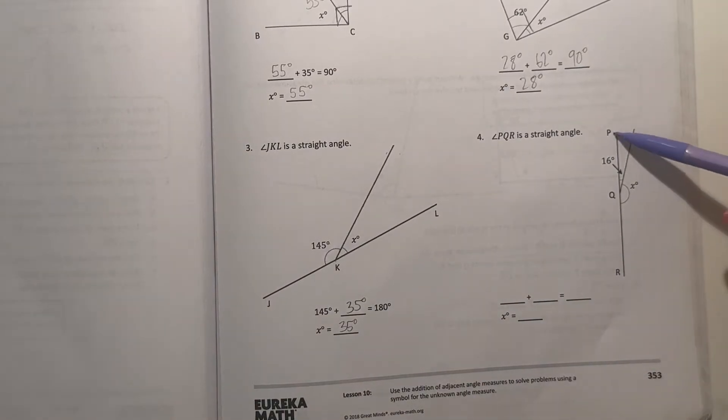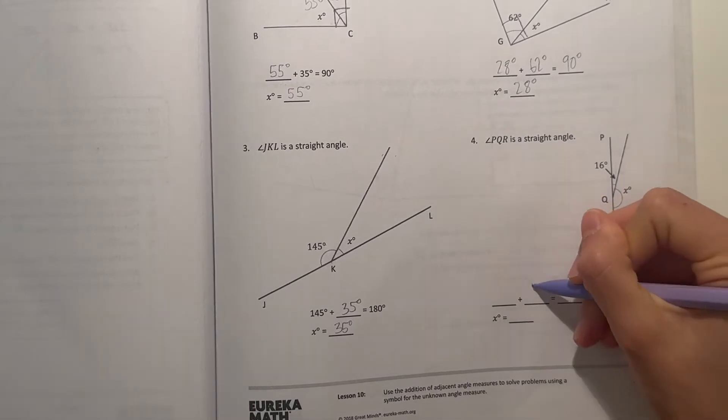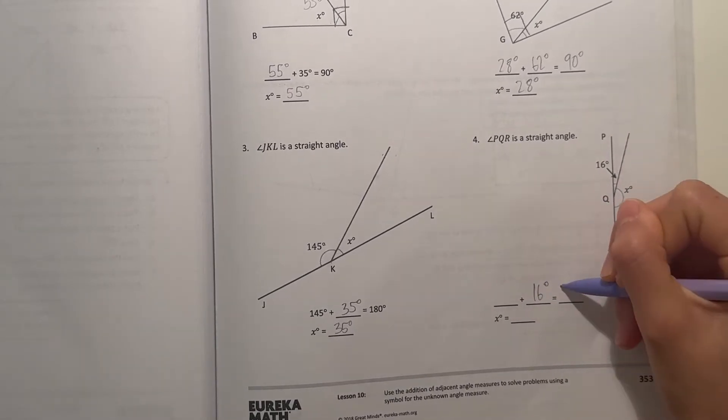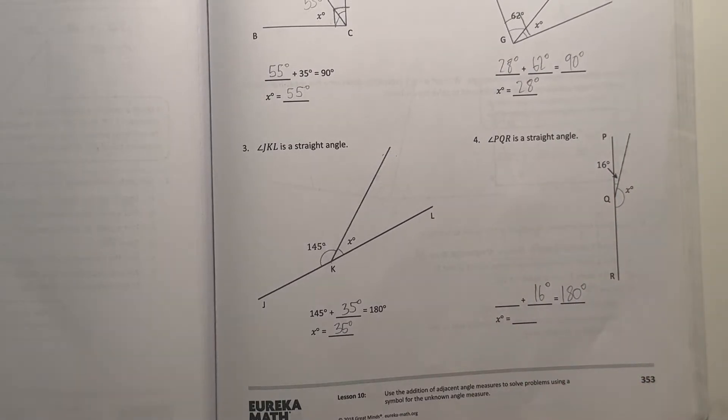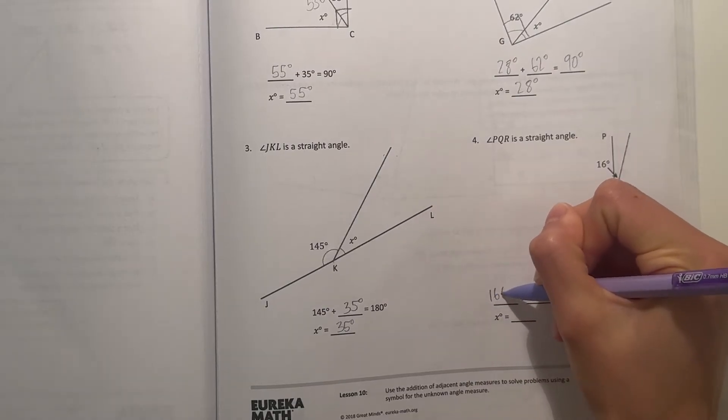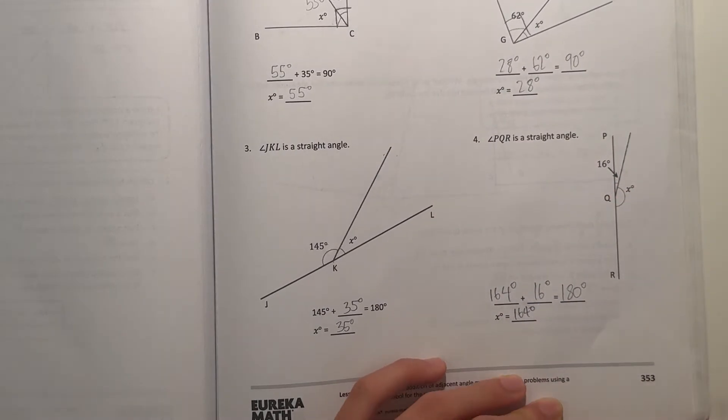And number four, angle PQR is a straight angle. So we have another line, so that's 16 degrees and the total is 180 degrees. What plus 16 is 180? 180 minus 16 is 164. So 164, that means x is 164 degrees.